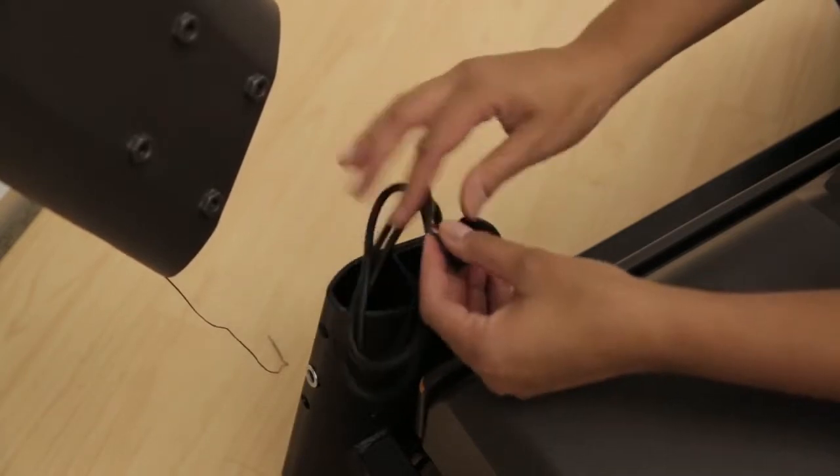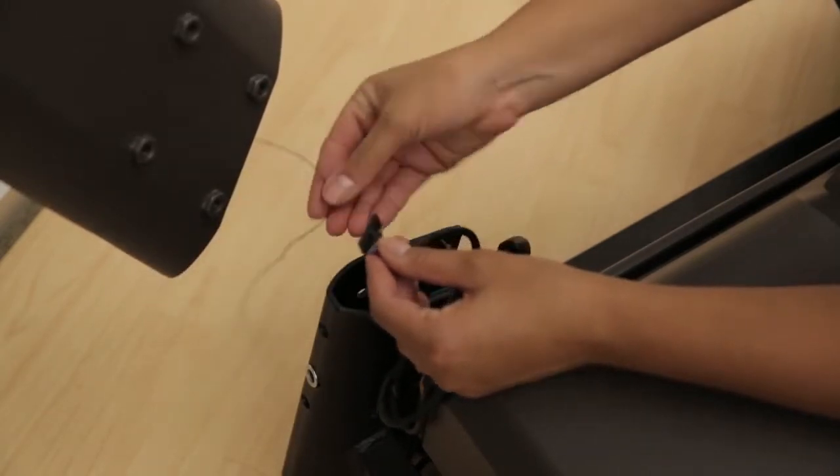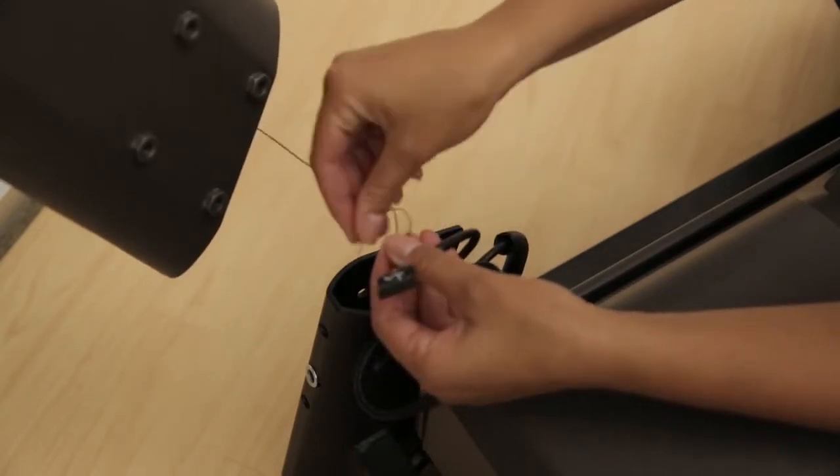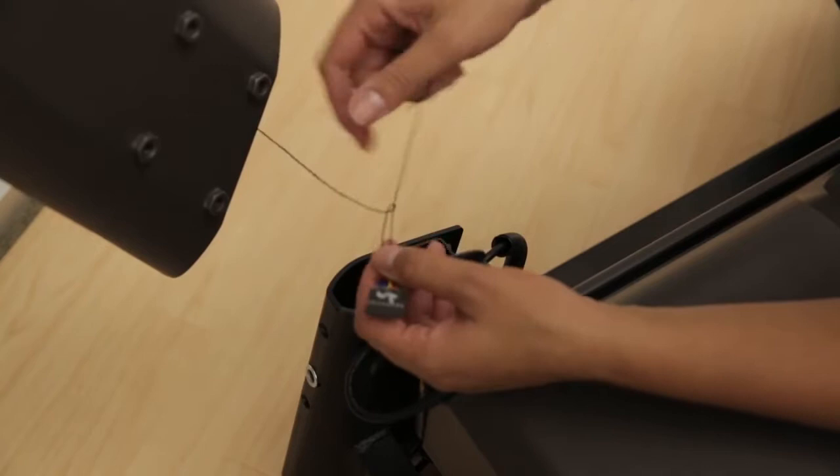On the right side of the unit, pull the console cable from the base frame. Attach the cable to the lead wire at the bottom of the right console mast and tuck the cable into the mast.